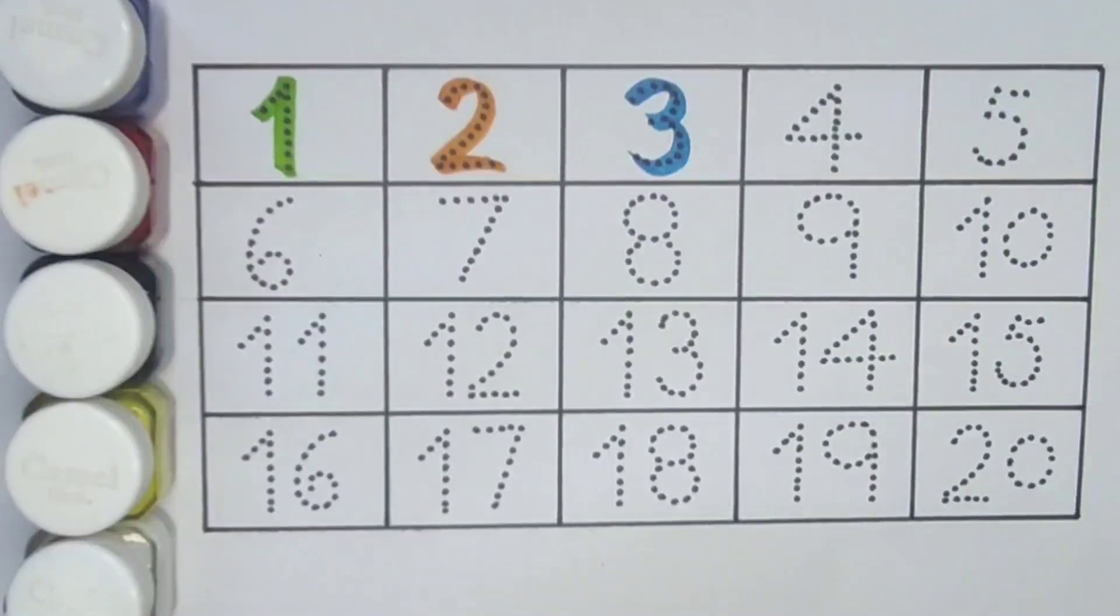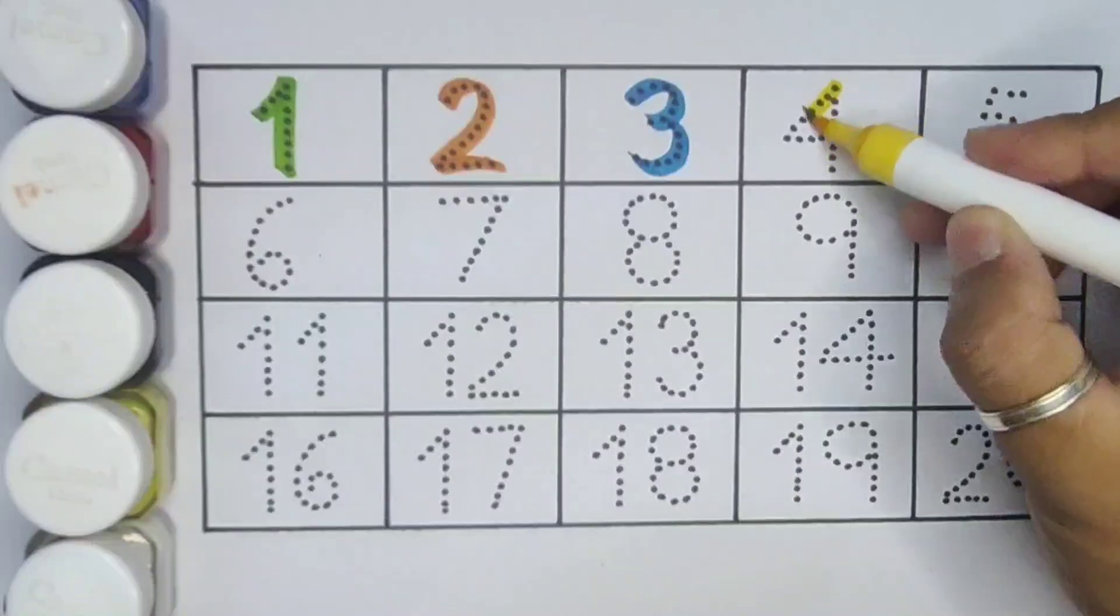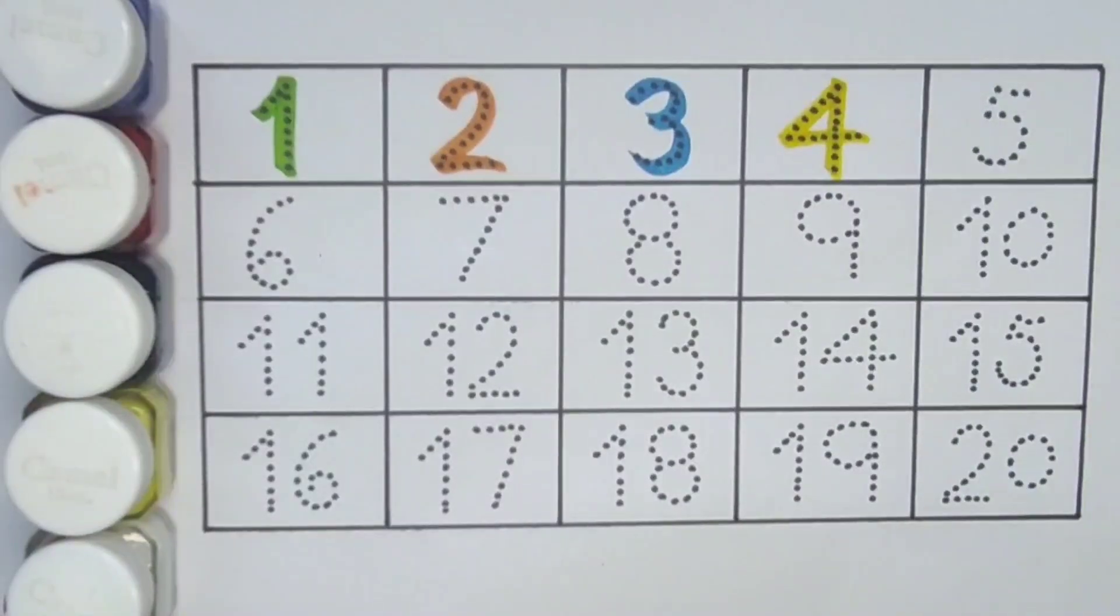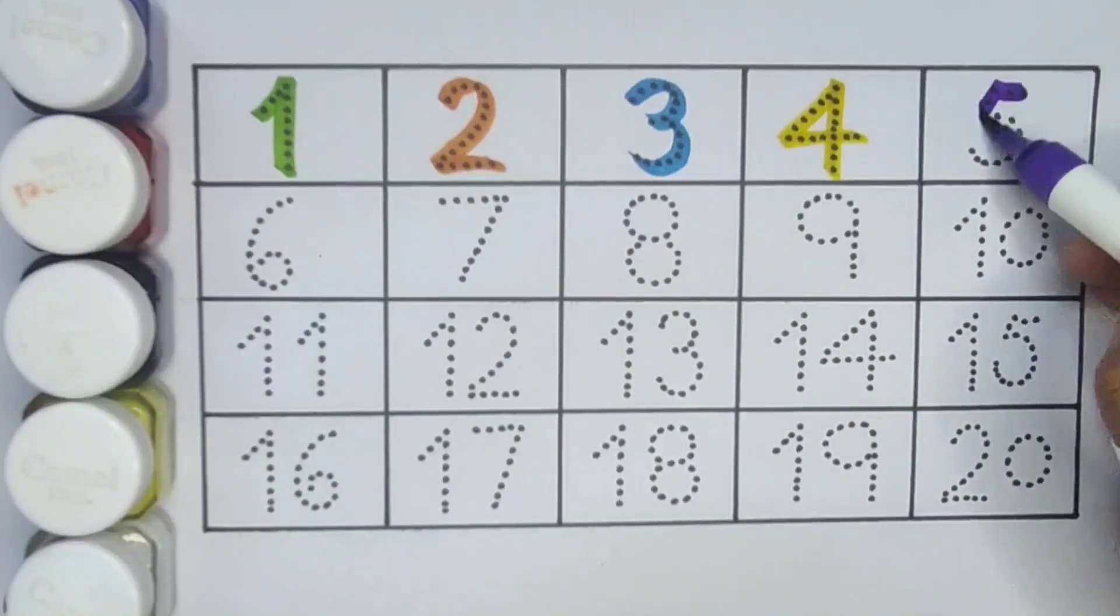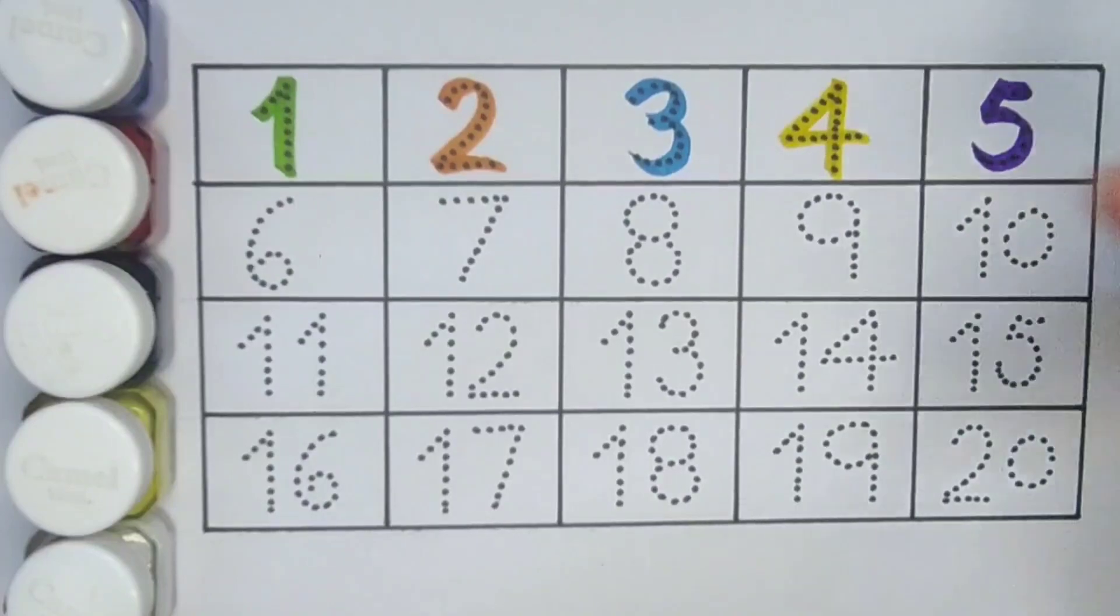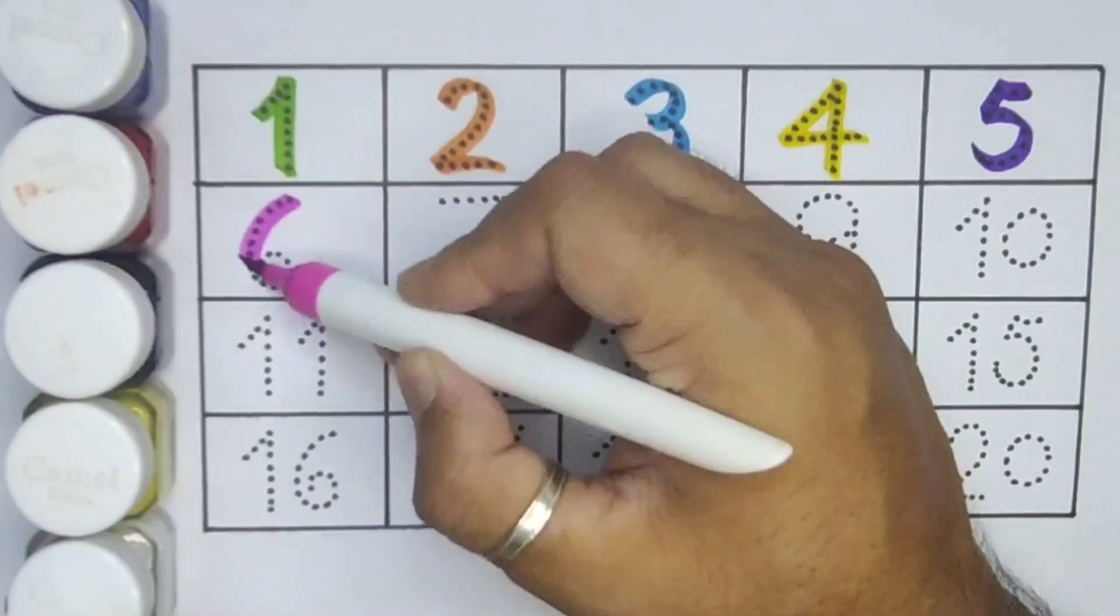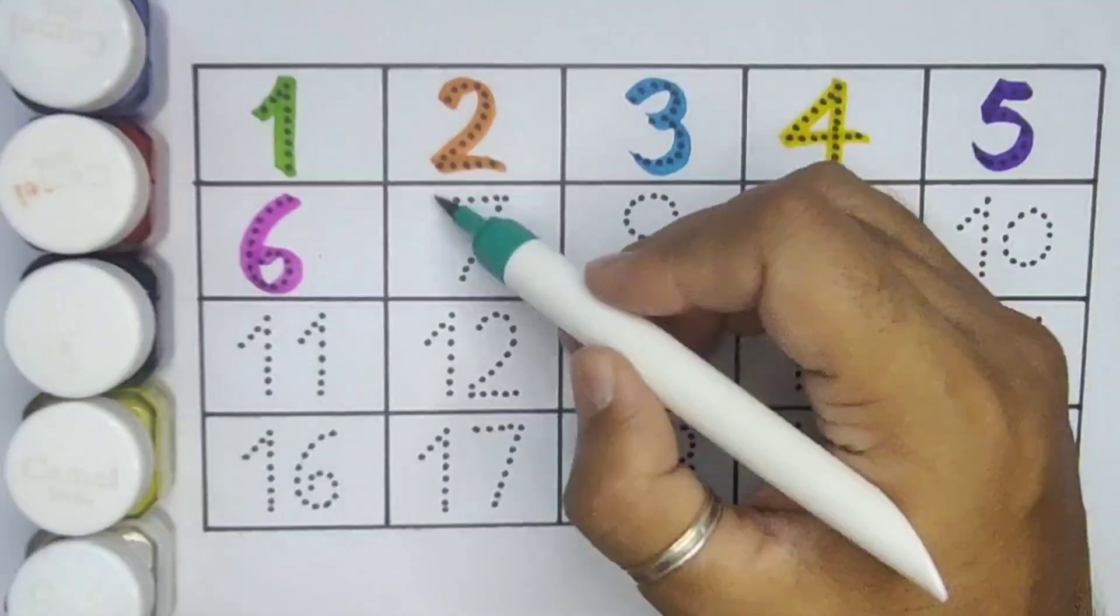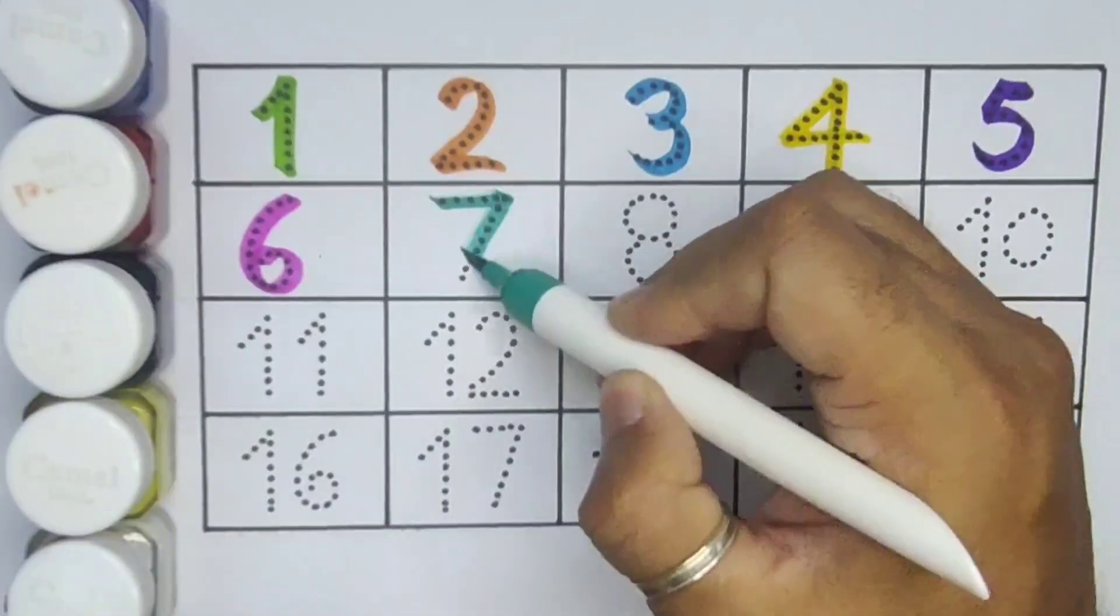Next kids, four, number four. Next kids, five, number five. Next kids, six, number six. Next kids, seven, number seven.